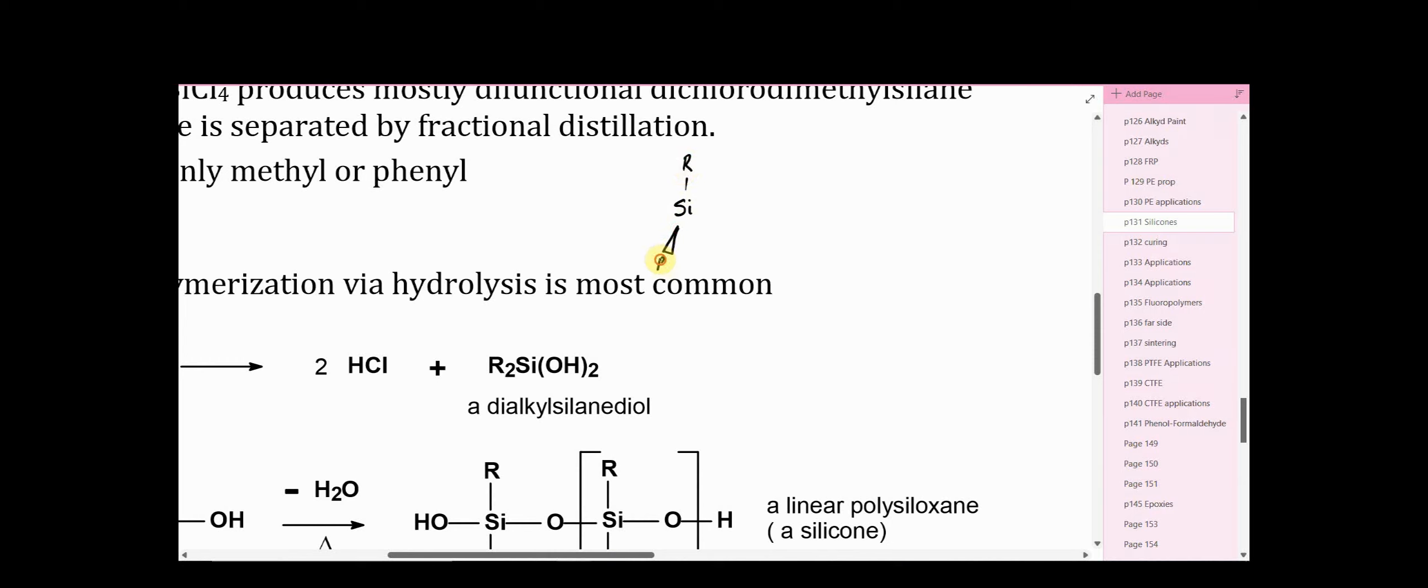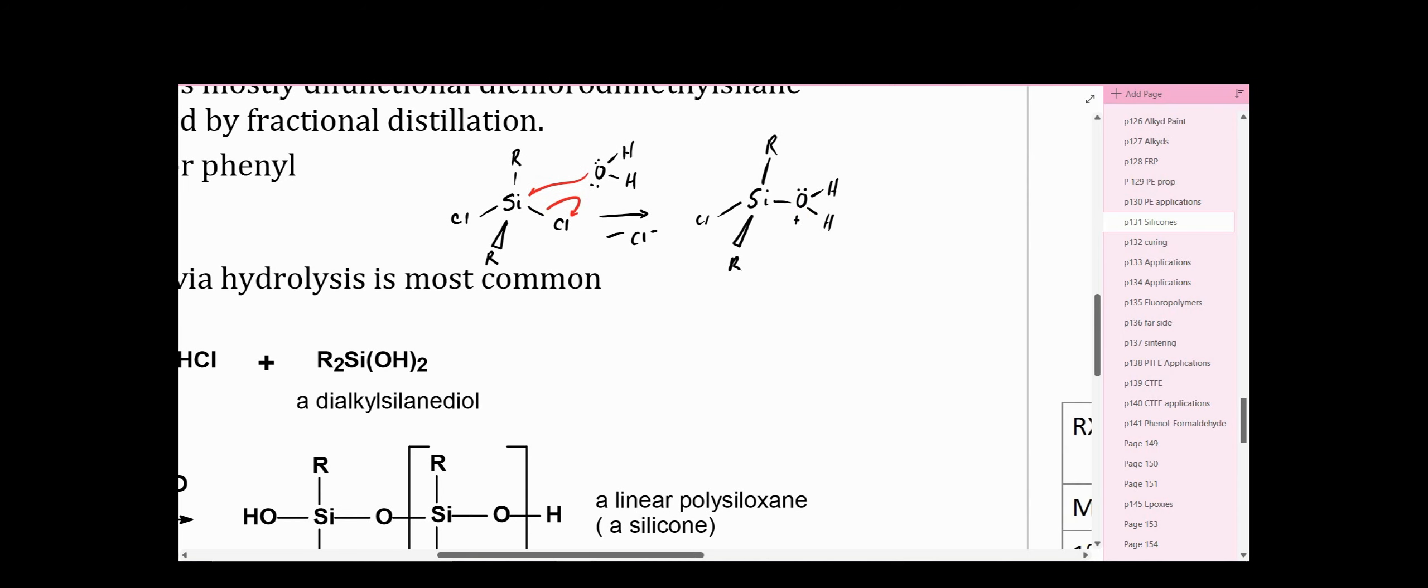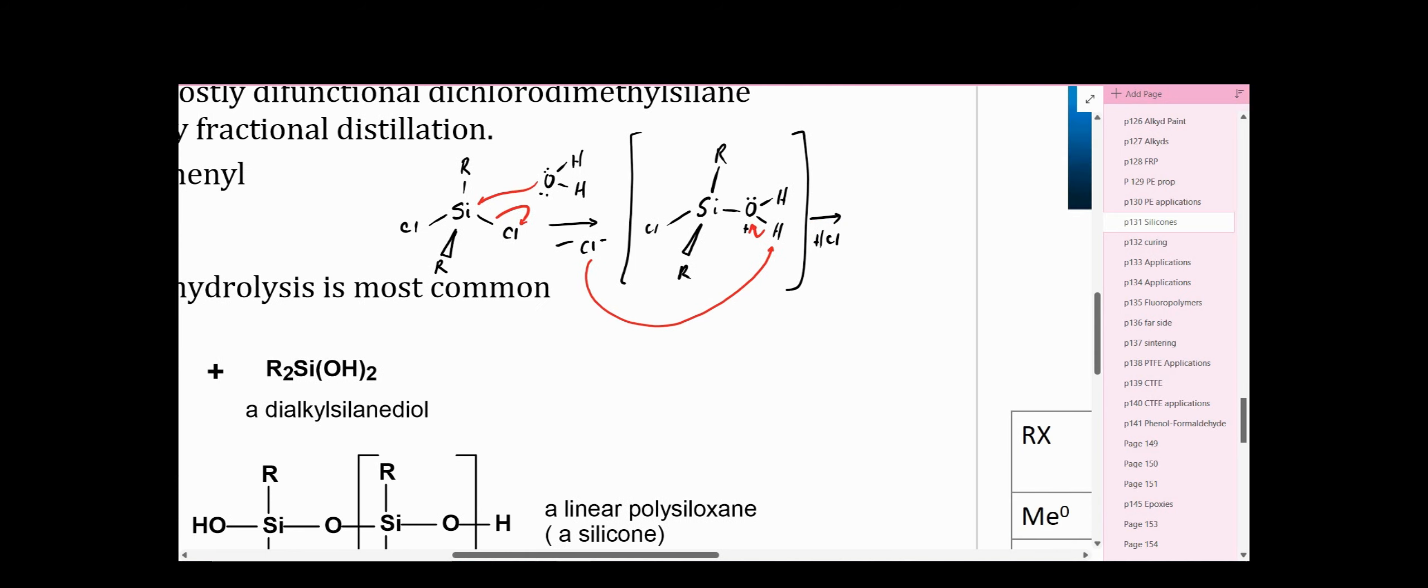So here is a dialkyl dichlorosilane, and it reacts with a water molecule in a substitution reaction. I'll call it SN2. Chloride is removed, wind up with an intermediate here, a protonated alcohol. And then in the final step, deprotonation gives a byproduct HCl, and we have a silanol.